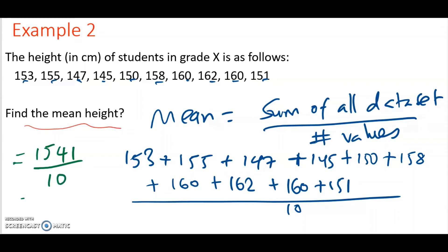And then you divide by 10. Therefore, the mean height of the students is 154.1, and the unit is in centimeters. So that is the mean height of all the students, similar to what we did in the previous example. You have to add all the numbers and then divide by the count.